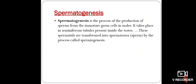Spermatogenesis is a part of gametogenesis. Gametogenesis means formation of gametes, and gametes are an essential part of sexual reproduction. Gametogenesis is of two types: spermatogenesis, which means formation of a mature sperm, and oogenesis, which means formation of a mature egg or ovum.